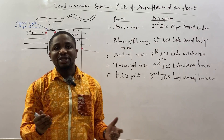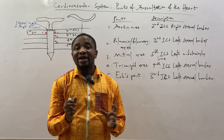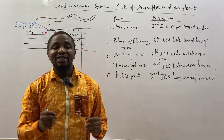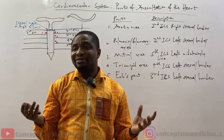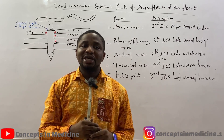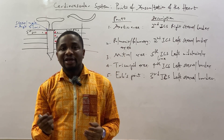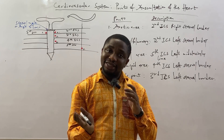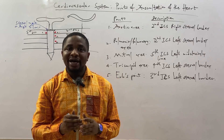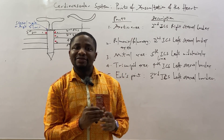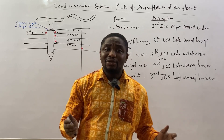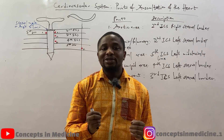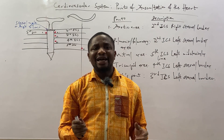Now let's describe each point. The first point, the aortic area — where do you find it? The aortic area is found in the second intercostal space, right sternal border, also called right sternal edge. The pulmonic or pulmonary area will be found in the second intercostal space — that is opposite to the aortic area — at the second intercostal space, left sternal border.